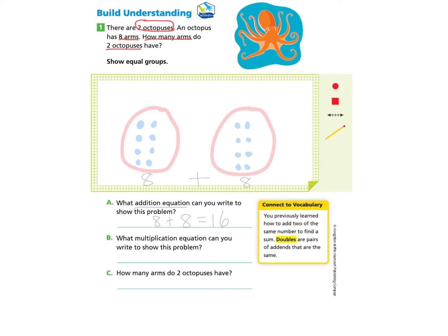Question B asks what multiplication equation can you write to show this problem? We have two equal groups — one, two — so I'm going to put a two here. In each group there are eight arms, so my multiplication problem is two groups of eight, which gives me sixteen as well. Whether we use addition or multiplication, how many arms do two octopuses have? Sixteen arms.